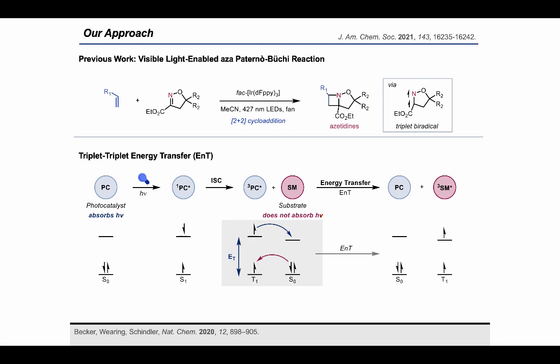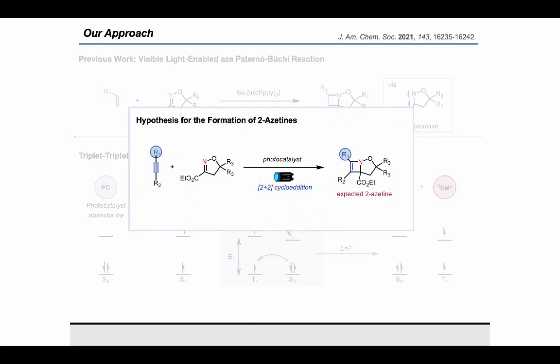How this triplet energy transfer works is: first the photocatalyst is excited by visible light and then undergoes intersystem crossing to access its triplet state. The triplet state of the photocatalyst can then interact with a substrate molecule, exchanging its electron in the SOMO for a ground state electron in the substrate's HOMO. This double electron transfer event results in the return of the catalyst to its ground state and the sensitization of the substrate to its triplet state, from where it can undergo a 2+2 cycloaddition with the alkene.